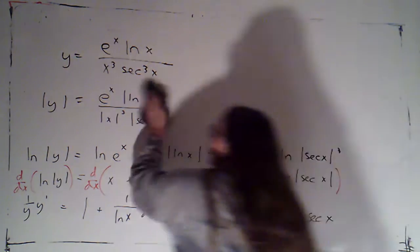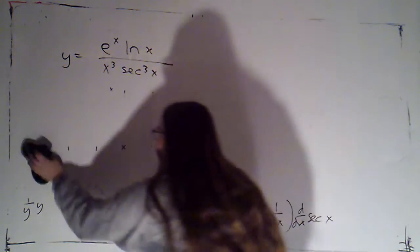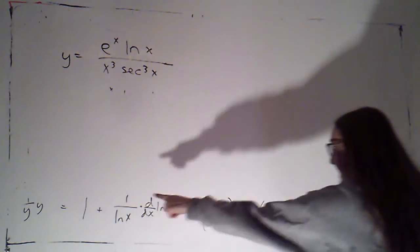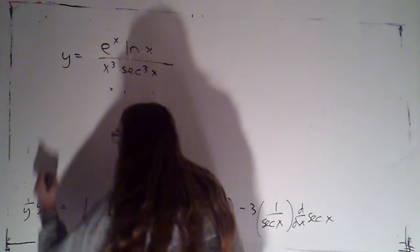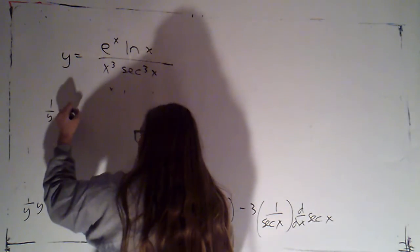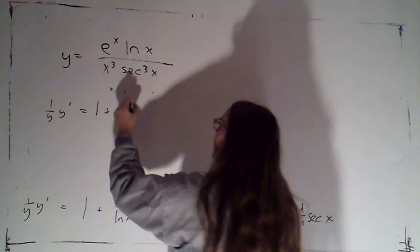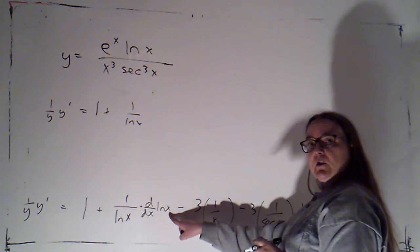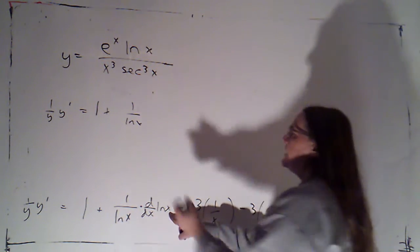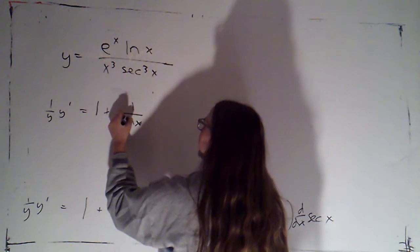So, I'm going to come back and evaluate those d by dx's. Again, if you felt comfortable doing that at the same time as you did this, that's fine. 1 over y, y prime is 1 plus 1 over the natural log of x. The derivative of the natural log of x is just 1 over x. So, that's going to put another x in the denominator, and I'm just going to put that in front of the ln.